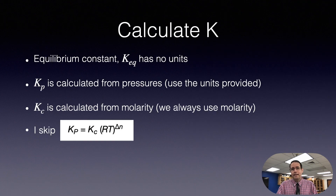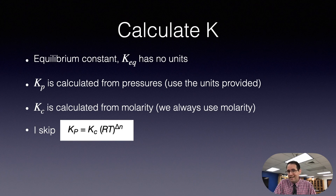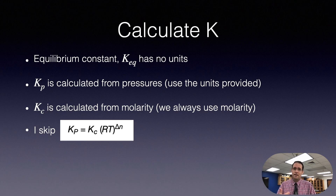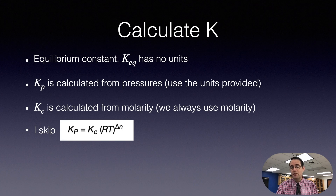Now, how do you calculate K? I call the equilibrium constant K_eq, or K_p when calculated from pressures, or K_c when calculated from molarity. We always use molarity for concentration. K_p, K_c, and K_eq are essentially the same thing in my class. Technically, advanced textbooks have a formula to convert between K_c and K_p, but I skip that. Check the link in the description for the OpenStax chemistry textbook if you'd like to read more.